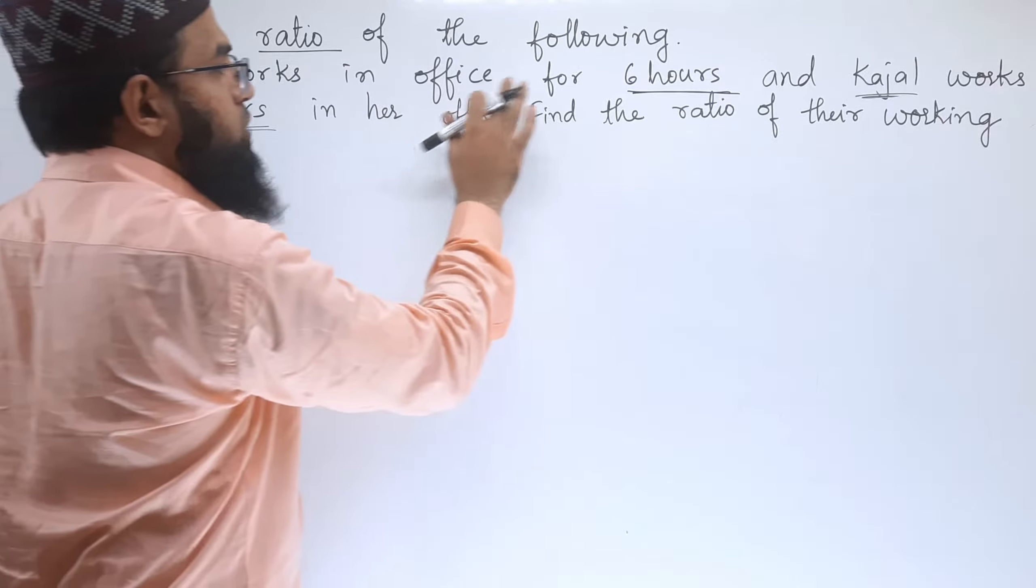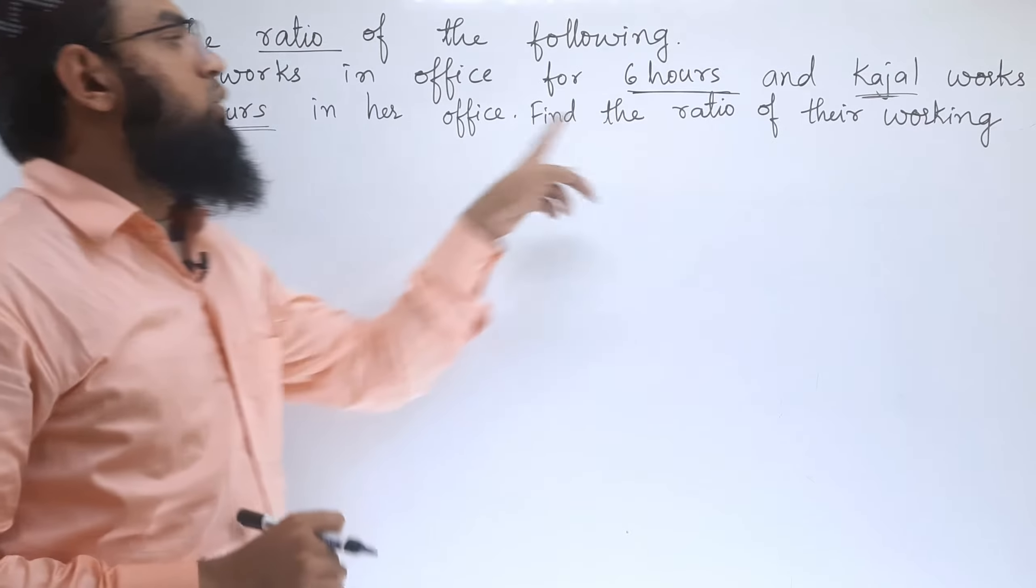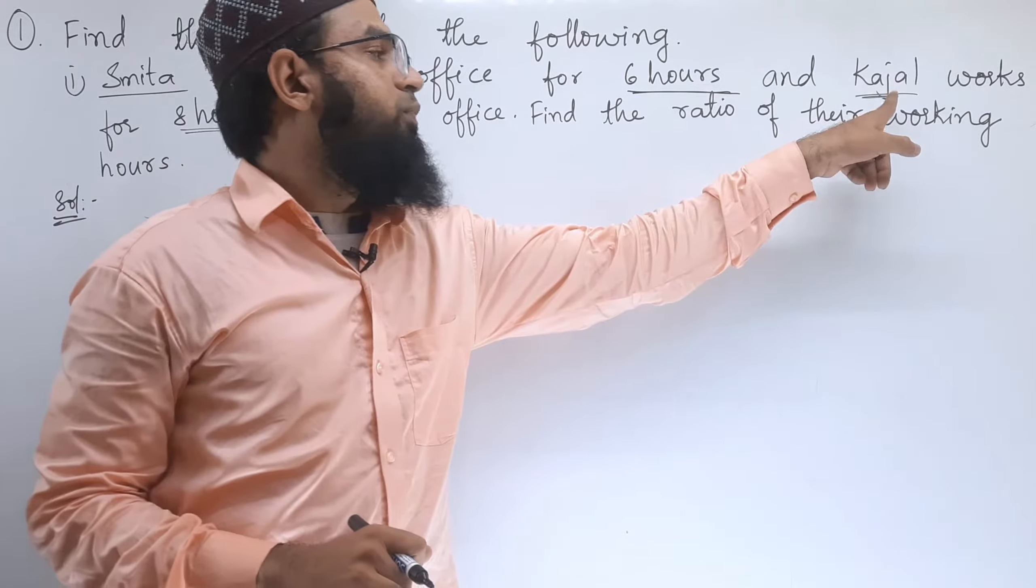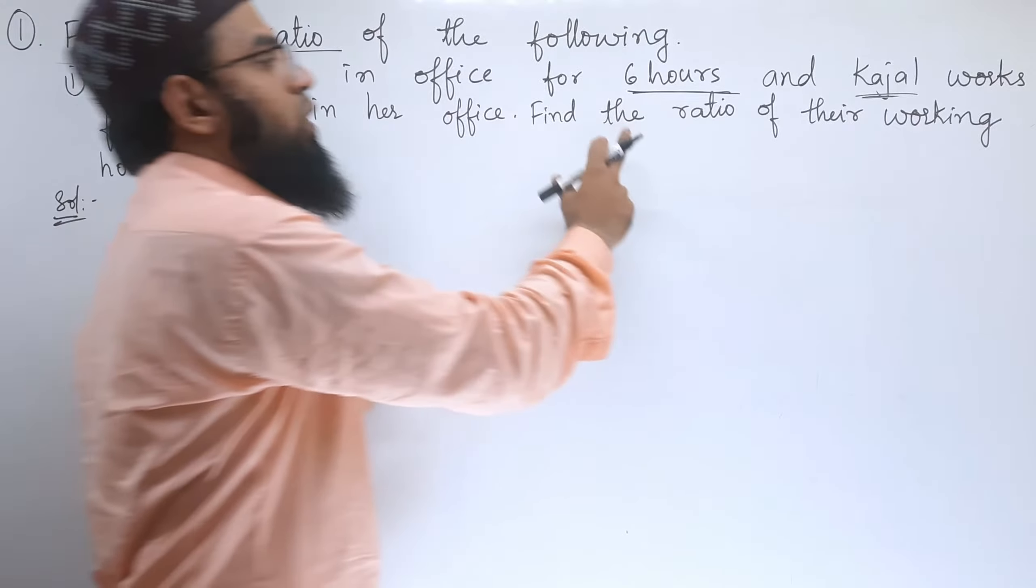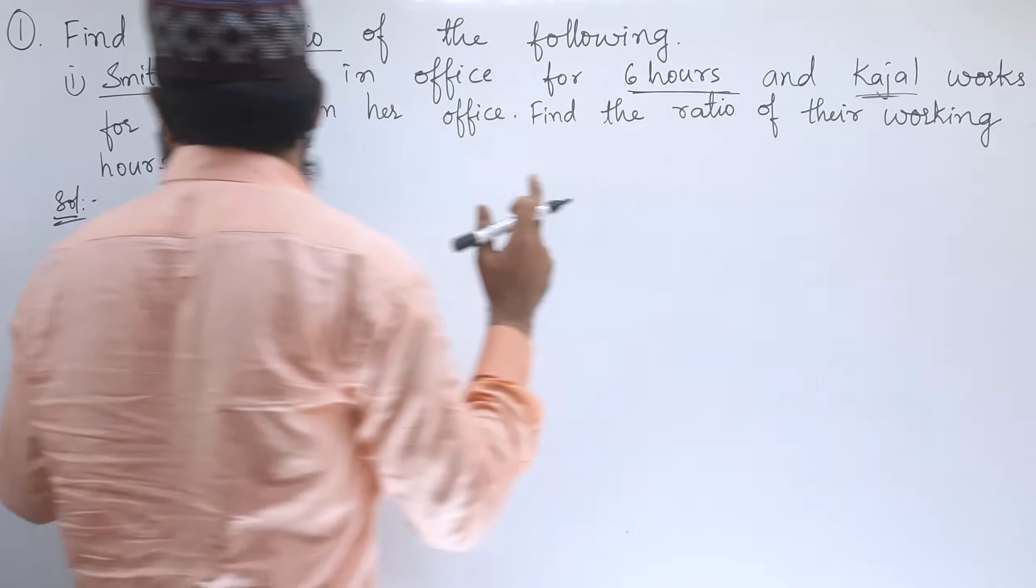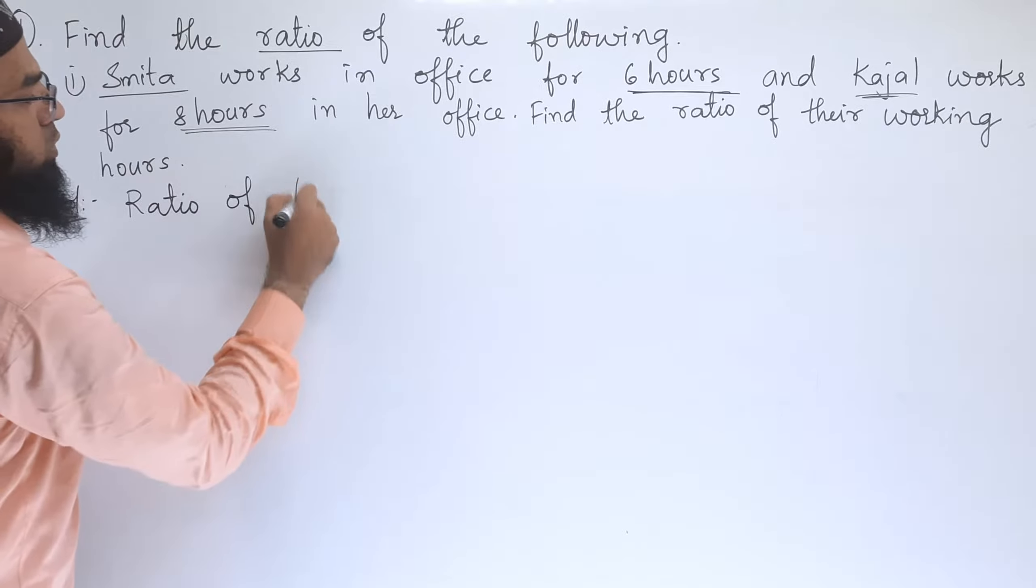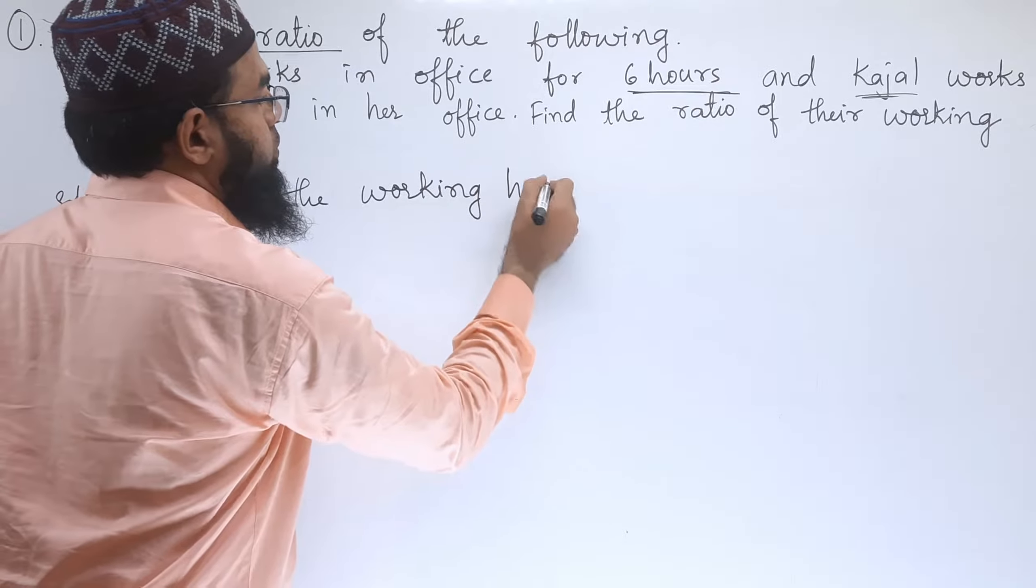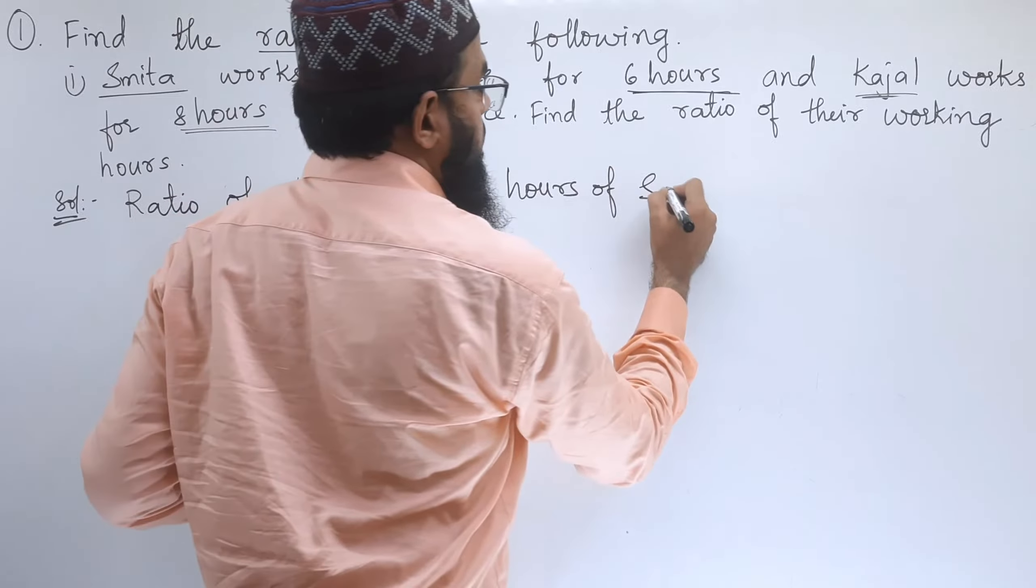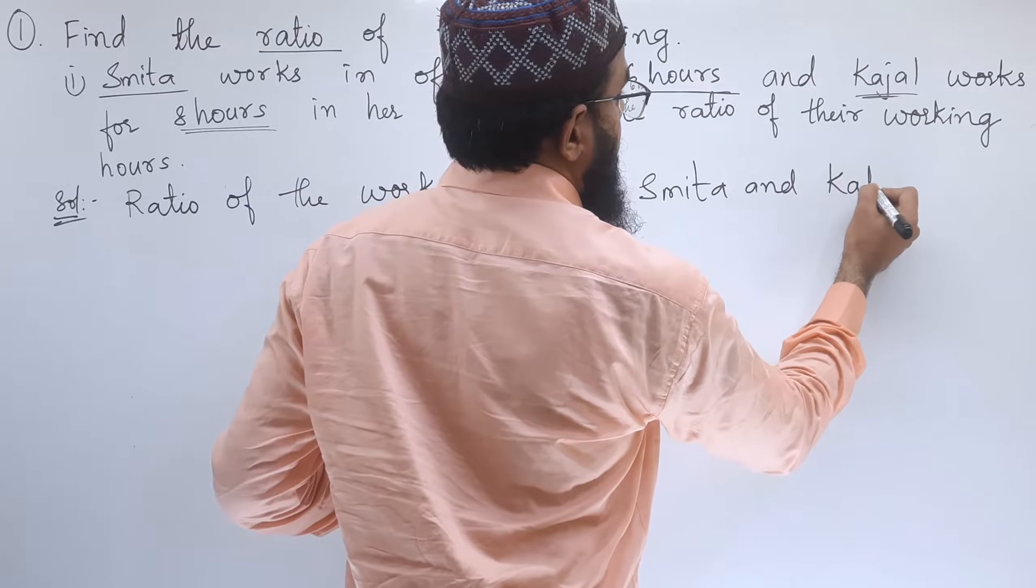First bit, Smita works in office for 6 hours. The time given for Smita for her work is 6 hours. And for Kajal, Kajal works for 8 hours in her office. We need to find the ratio of their working hours. So let us write, ratio of the working hours of Smita and Kajal.